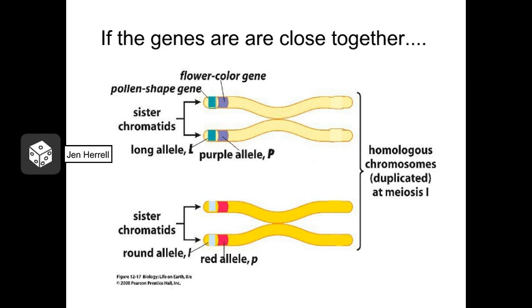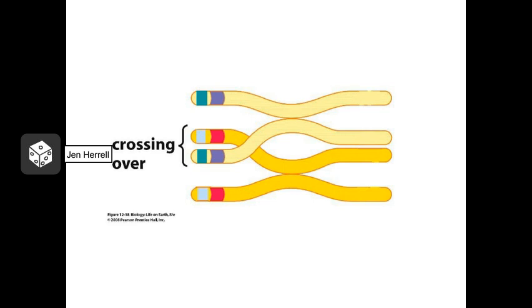Here we have a homologous pair of chromosomes that carry the traits for flower color and pollen shape. One chromosome carries the allele for purple flowers combined with the allele for long pollen grains, while the other carries the allele for red flowers combined with the allele for short pollen grains. Here we have the crossing over event, which occurs in prophase 1 of meiosis 1. Notice that these genes for flower color and pollen shape are located really close together on this chromosome, so it's very unlikely that crossing over will occur between them.